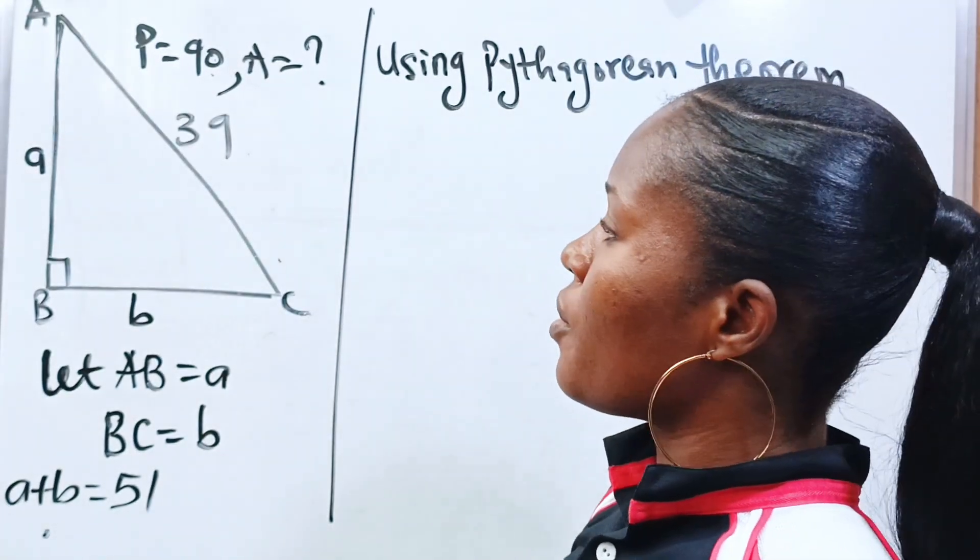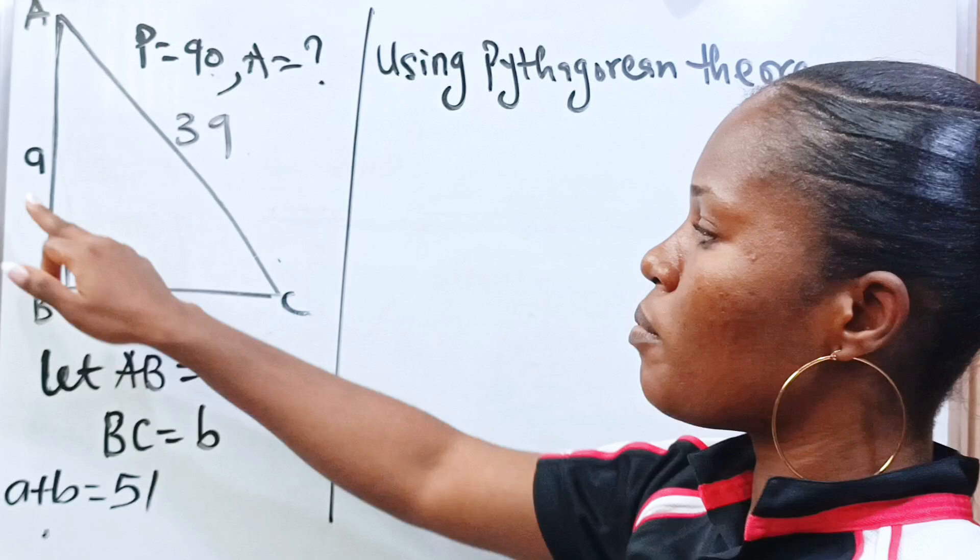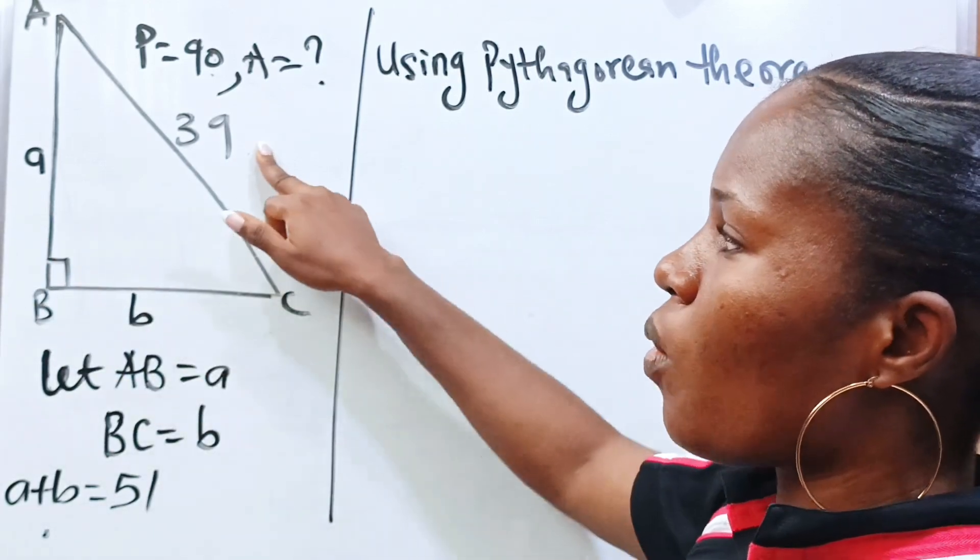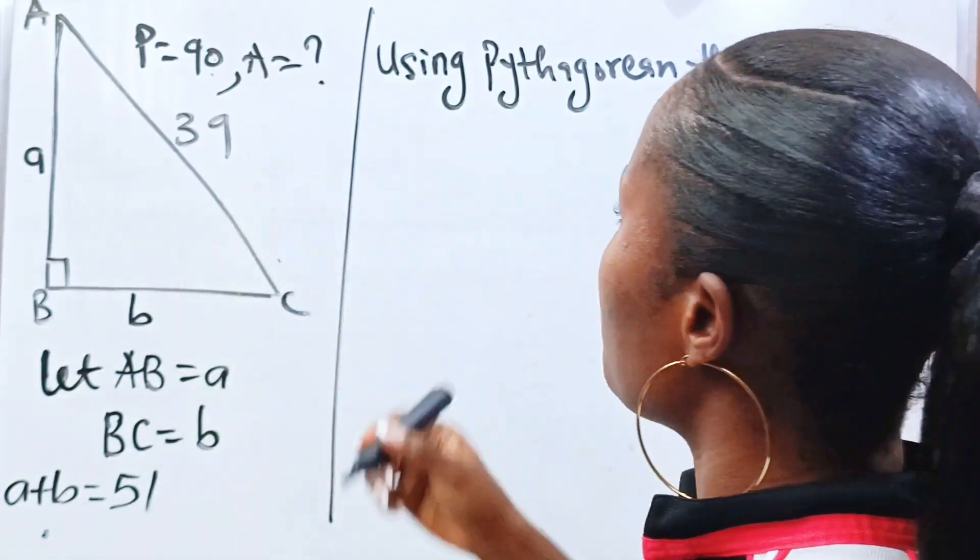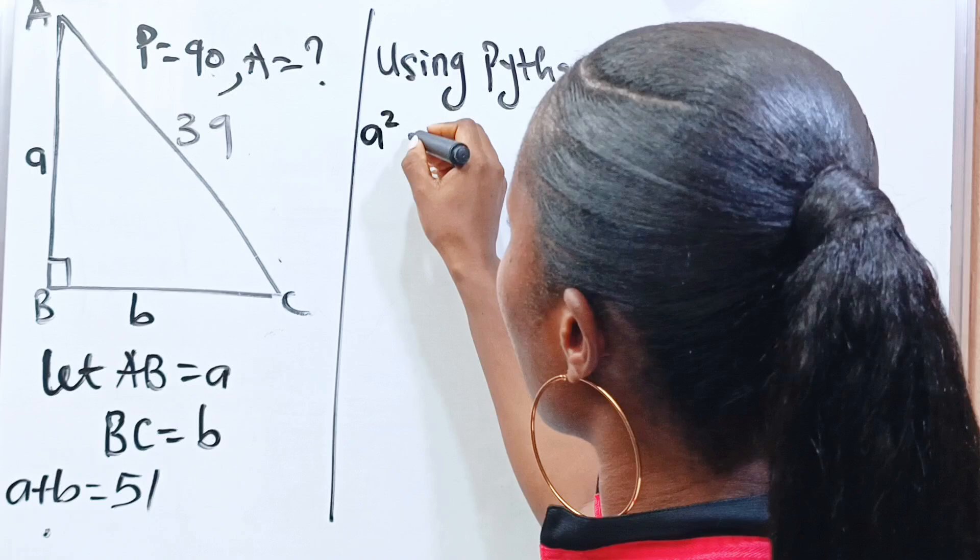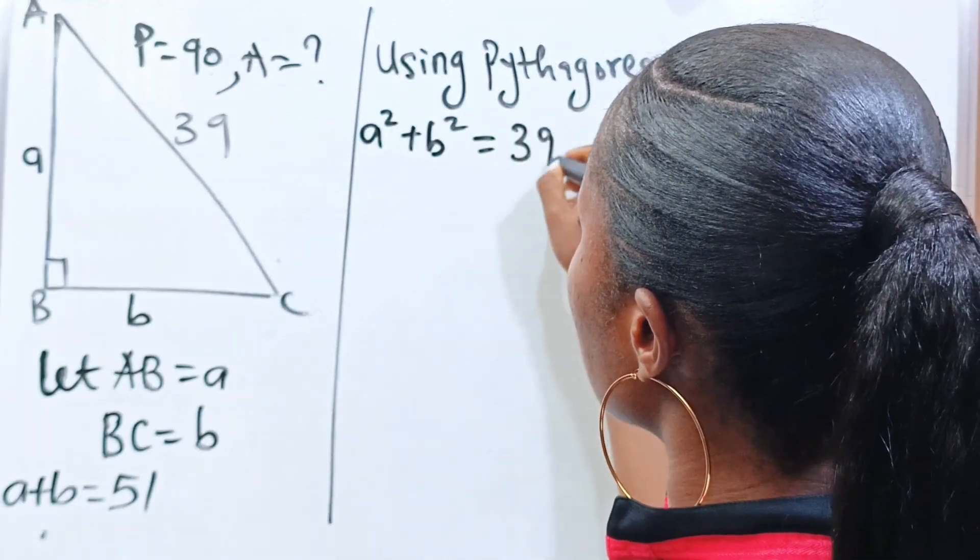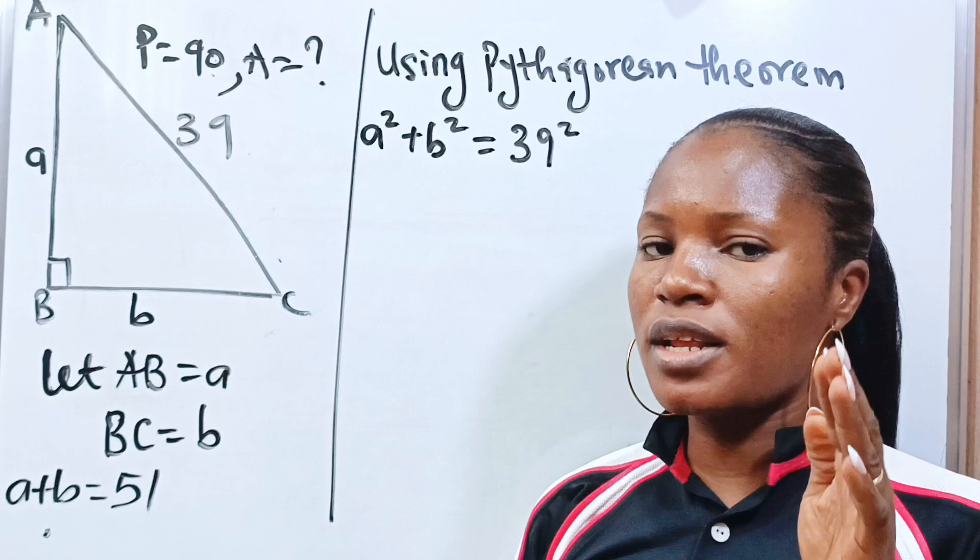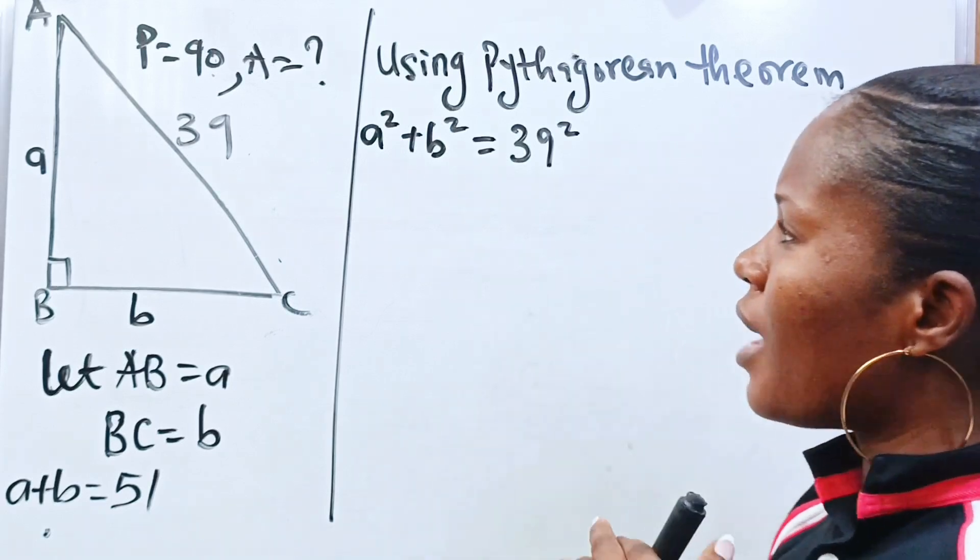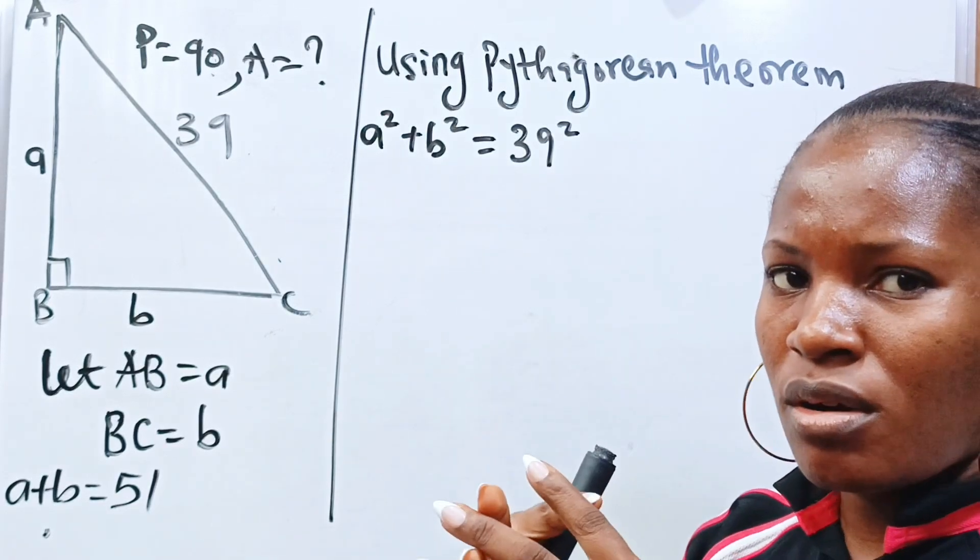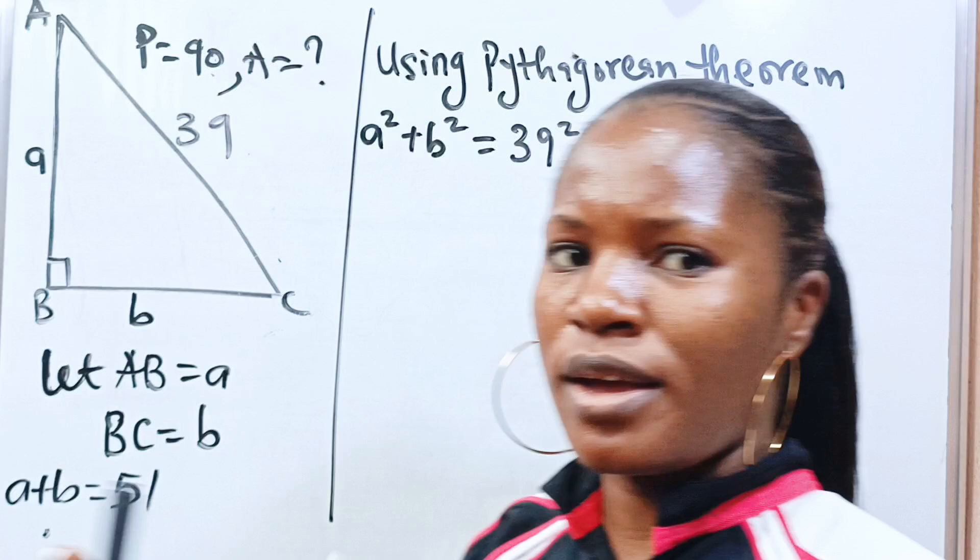According to Pythagorean theorem, a squared plus b squared is equal to the hypotenuse squared. So we have a squared plus b squared is equal to 39 squared using the Pythagorean theorem. Now, if you look at this, we are stuck. We don't know what to do anymore.